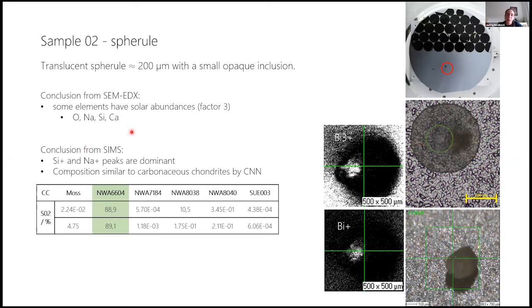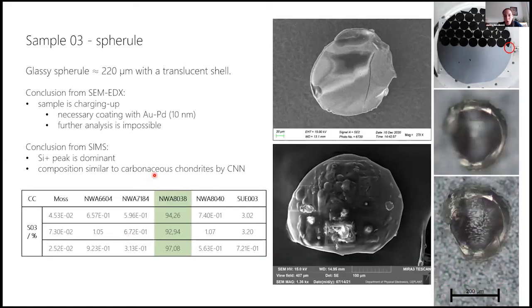And when comparing it with the SEM-EDX, solar abundances were within a factor of three. And the comparison with the neural network showed that it is very similar to one of the carbonaceous chondrites, so we assumed it is a micrometeorite.